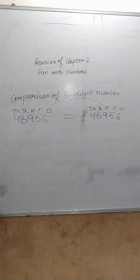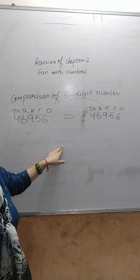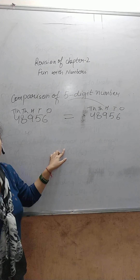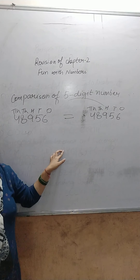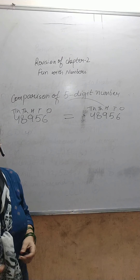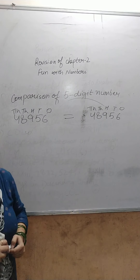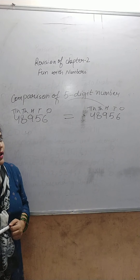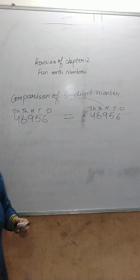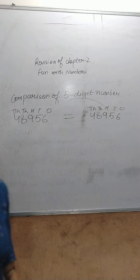So we put an equal sign because both numbers are equal. I think it is clear to you. In the next topic we will revise round off to the nearest 10, nearest 100, and nearest 1,000. Practice it properly. Thank you.